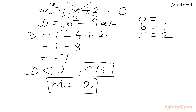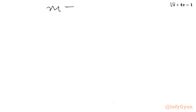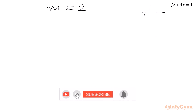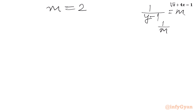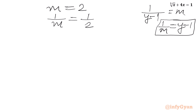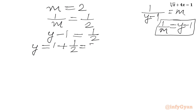Now m was our substitution. Since 1 over (y minus 1) equals m, we have 1 over m equals y minus 1. So 1 over m equals 1 over 2. Replacing 1 over m with y minus 1: y minus 1 equals one half. Adding 1 to both sides, we get y equal to 1 plus one half, which gives y equal to 3 over 2.